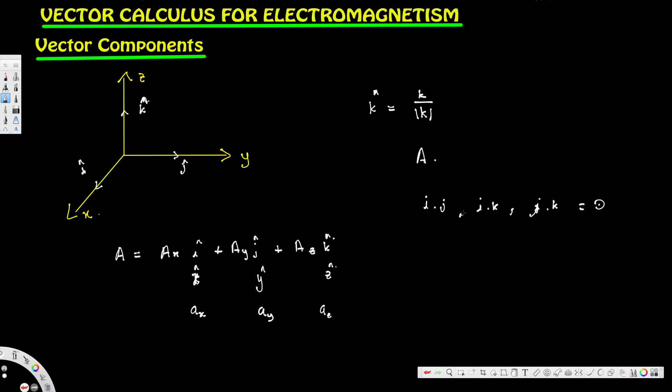Because all of them are perpendicular to each other, you will get zero. In another case, if you dot i dot i, or j dot j, or k dot k, you will get one. That's what we have to know about vector components in 3D space.